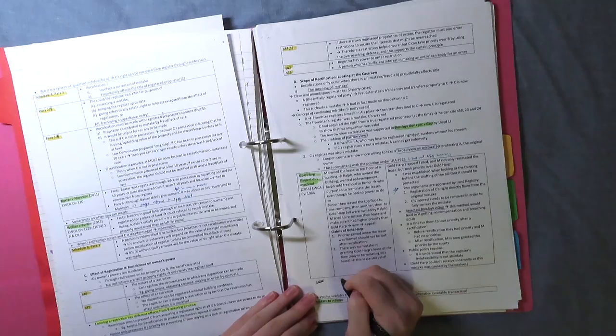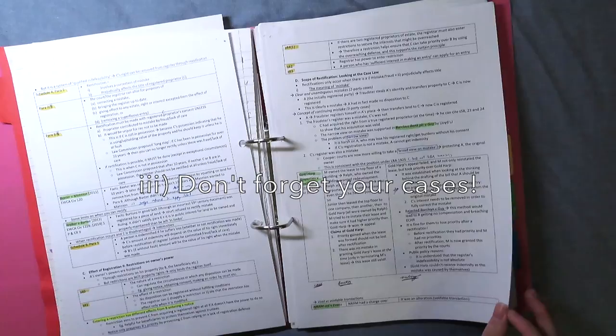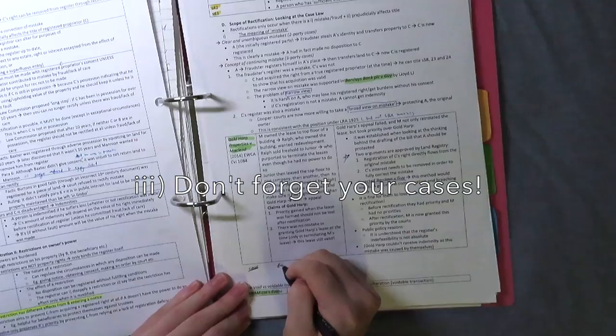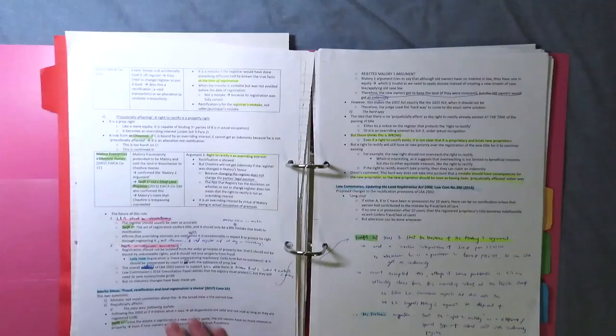So that now I have a full document of every single thing I will need to study for my classes. And finally, you can't forget your cases. So what I do when I take notes of my cases is I just compile them with the rest of my notes, and I put them in little boxes so that I have the case name, the facts, and the main ruling side by side so that I have all the information I need.